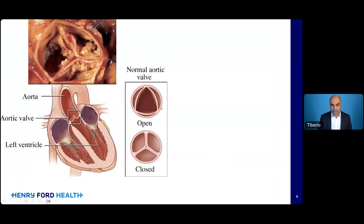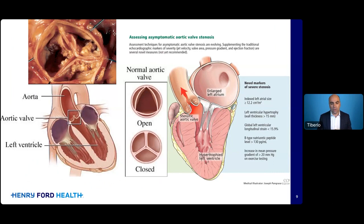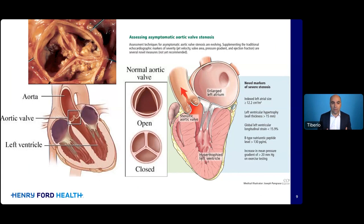Here is a normal aortic valve with three leaflets, and here is a real-life explanted stenotic aortic valve. You can see why this valve leaflet, meant to be nice and thin, might not open well. All these white nodules on the valve are calcium. Over years and years of blood going through that valve — 60 to 80 times a minute, 24 hours a day for 60 to 70 years — those leaflets get bombarded with pressure, leading to inflammation, calcification, and ultimately stiffness of the aortic valve.